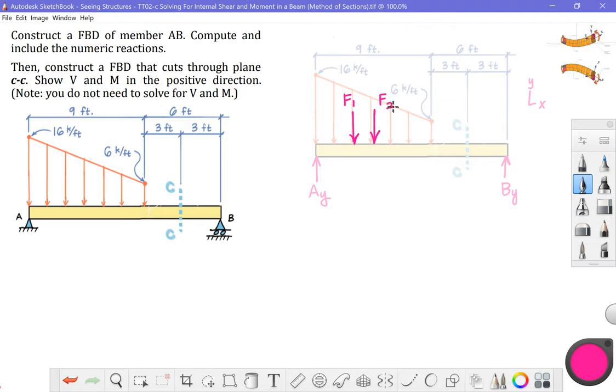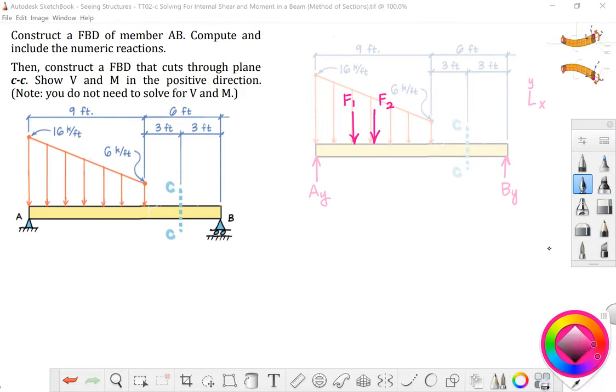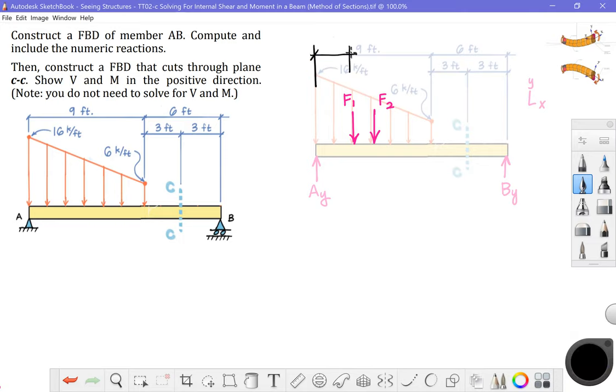Let's do F sub one and F sub two. F sub one, since that is the third point of the triangle from the heavy side or the side on the left, we'll measure that out as three feet. F sub two is half of nine, half of that distance. So I'll place this down here as 4.5 feet.